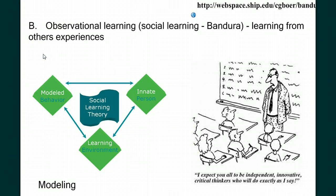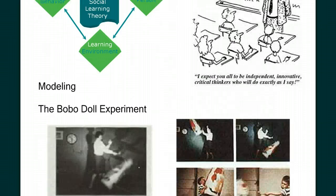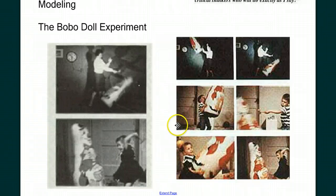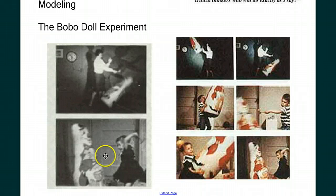Let's describe Bandura's classic Bobo experiment. In the Bobo doll experiment, children were shown a film of an adult playing violently with a Bobo doll. The adult would hit, kick, and throw the doll, yell at it, and in all other ways abuse it. Later, when the children were left alone in a room with many toys, including the Bobo doll, they mimicked the behavior they had seen modeled by the adult. Not only did they mirror the adult's behaviors, they found other creative ways to act violently towards the doll. Children who had not seen the violent behavior modeled did not show these levels of aggression. The children had learned by observation.